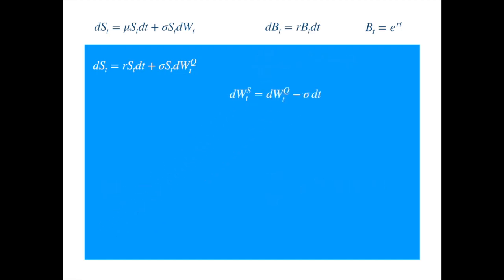Now, we substitute for the Brownian under Q to get. Combining dT terms, we get the dynamics of the stock price under the probability measure associated with the stock numeraire.